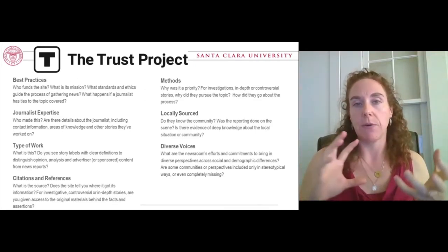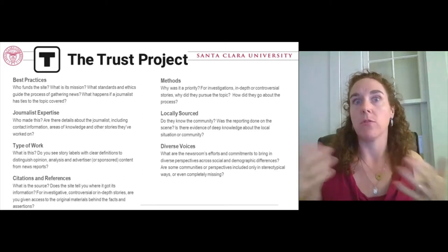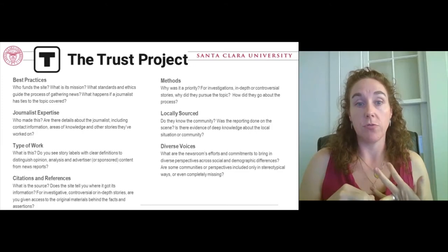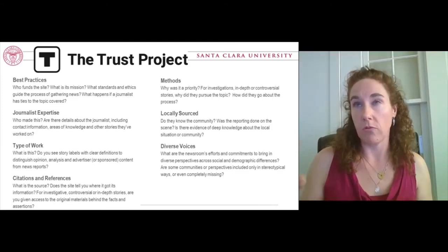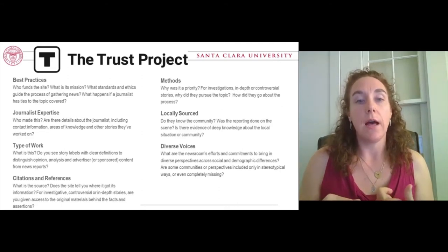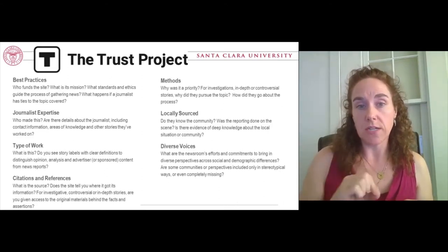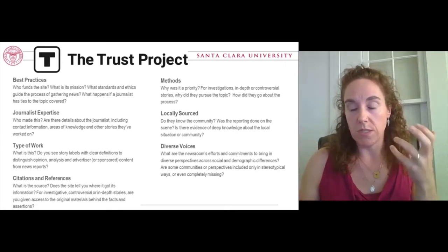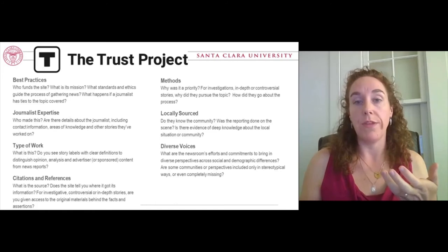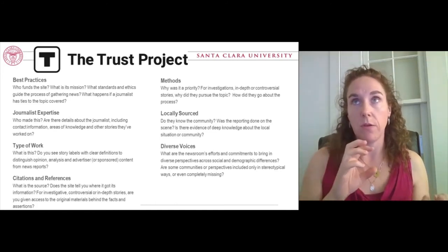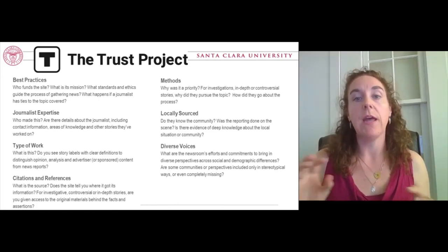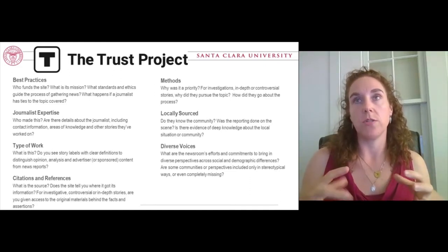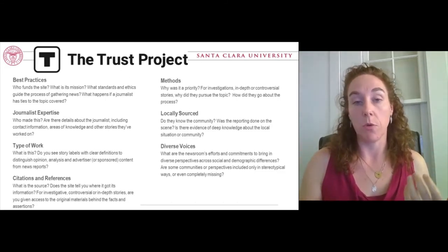They have these questions they ask about sources to help people decide whether a source is credible when they're reading it. These refer to editorial best practices, the expertise of the journalist, the type of work or genre of journalistic writing, the research that the source itself does, its citations and references, the methods used to decide to write and conduct the article, the degree to which it uses local sourcing and the relationship of both the author and the publication to the community, and the extent to which the news organization and article itself is committed to diverse voices and especially to resisting stereotypical representations of marginalized groups.